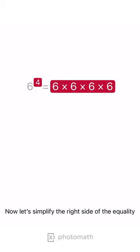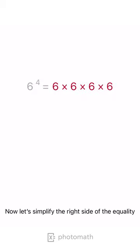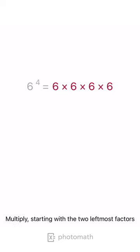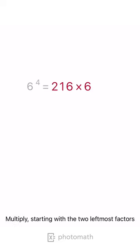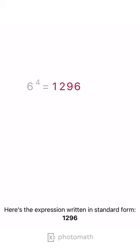Now let's simplify the right side of the equality. Multiply, starting with the two leftmost factors. Here's the expression written in standard form: 1296.